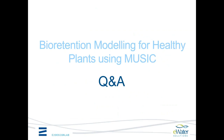That's the presentation. Opening up to questions. The first question: can you please elaborate on the recommended soil properties to enhance tree health without creating leaching? Specifically, organic matter specification — to what extent does the type rather than quantity of organic matter affect nutrient leaching? This is probably the toughest question I could be asked.